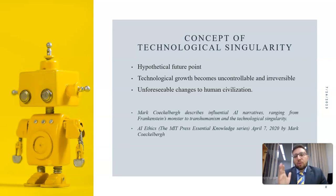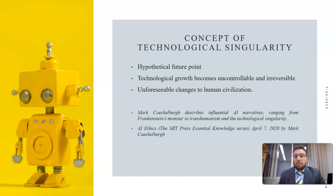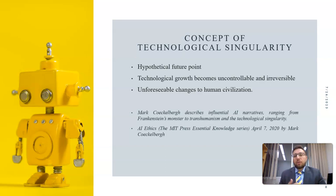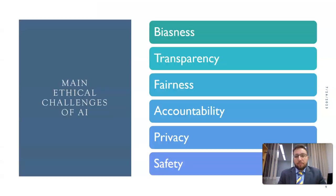There is a popular concept of technological singularity, which describes a hypothetical future point where technologies lead us to uncontrollable and irreversible, unforeseeable changes to human civilization. This concept has been connected to the Frankenstein monster and to transhumanism.